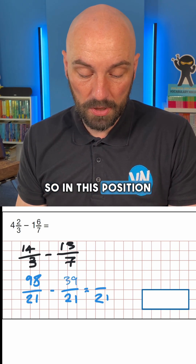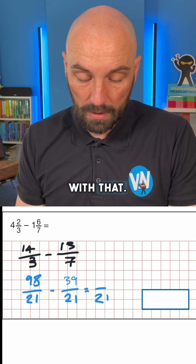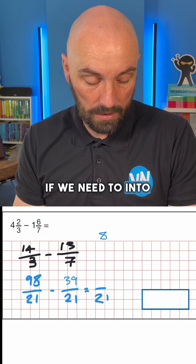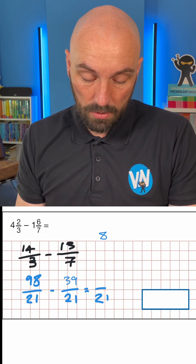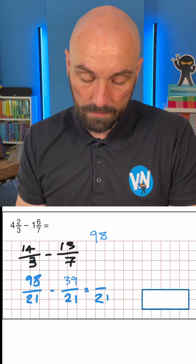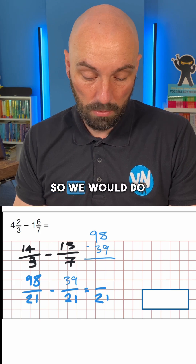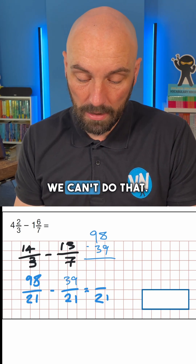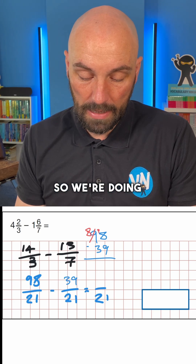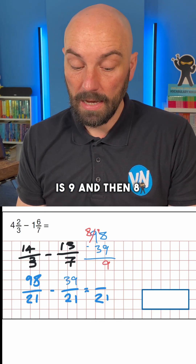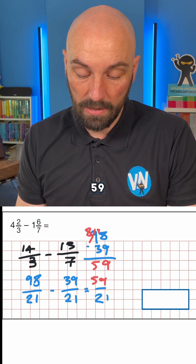In this position we need to do 98 take away 39. Some of us might not feel confident with that, so we can drop into a column subtraction. We do 8 take away 9 — we can't do that, so we need to exchange. So we do 18 take away 9 is 9, and 8 take away 3 is 5, leaving us with 59. So we have 59 over 21.